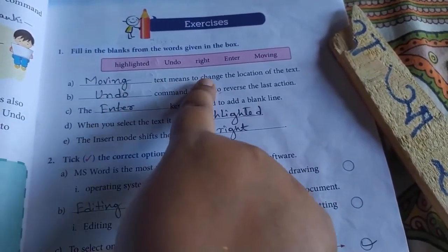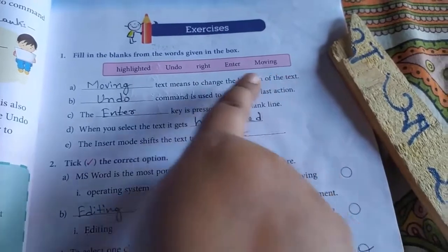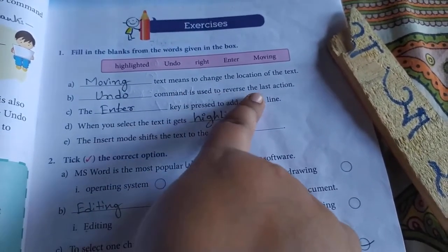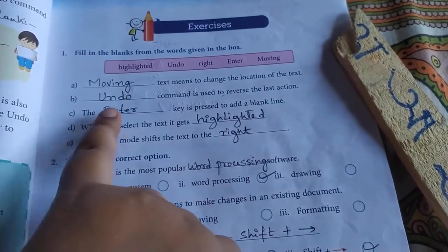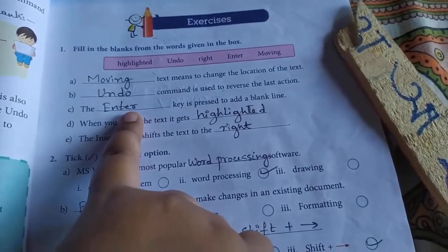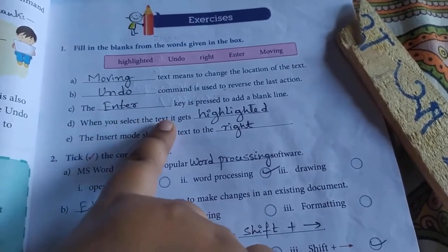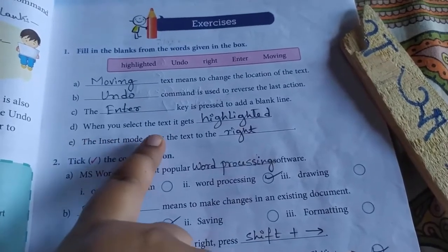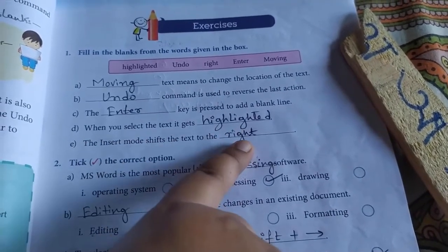Moving text means to change the location of the text. The undo command is used to reverse the last action. The enter key is pressed to add a blank line. When you select the text, it gets highlighted. The insert mode shifts the text to the right.